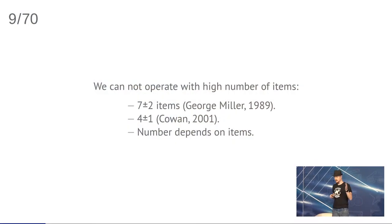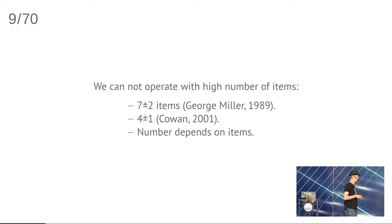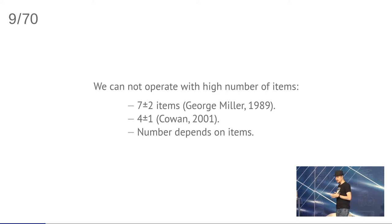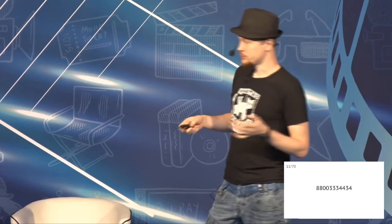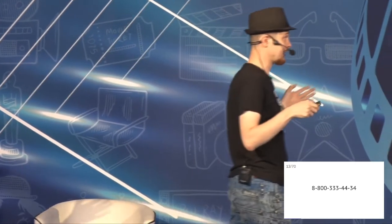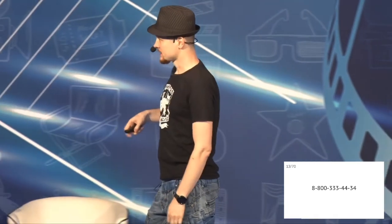We have input and output, and we can put things into short-term memory, but there is a problem: humans cannot operate with a high number of items. Psychological research — George Miller in 1956 — said we can keep 7 plus-or-minus 2 items in memory. Later, that number was corrected to 4 plus-or-minus 1, which is very disappointing. That said, the number depends on items, and there are tricks like chunking. If you divide a long number into chunks of, say, 5 groups, that's manageable — exactly 5 items, matching this research.